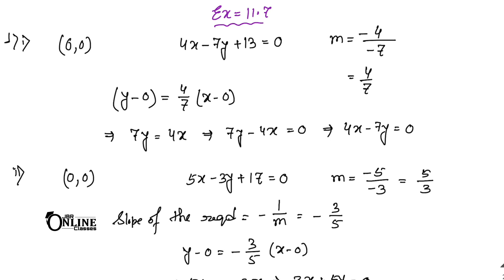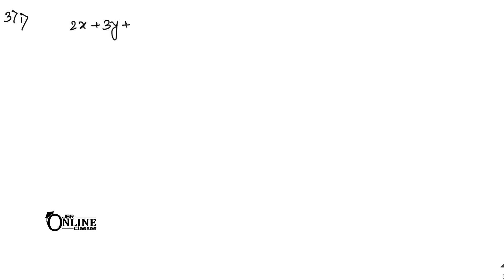Note: Sum 2 is similar to Sum 1 but uses different points. Where the point is (-2, 3), replace y - 0 with y + 2 and x - 0 with x - 3. For another part with point (-1, 2) and (something), replace accordingly with y - 1 and x + 2.